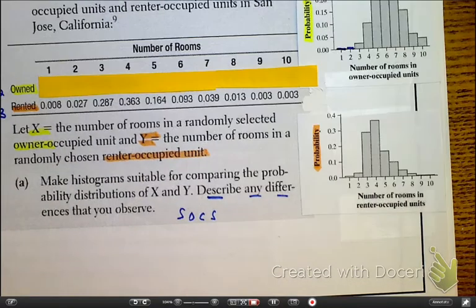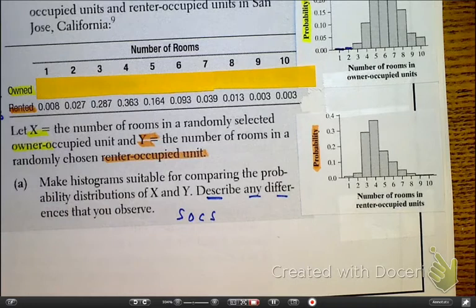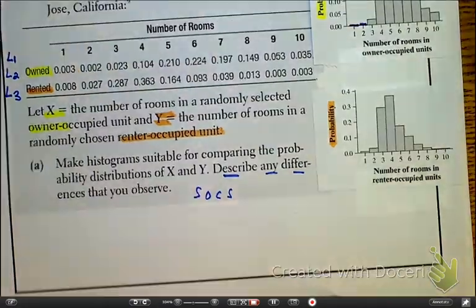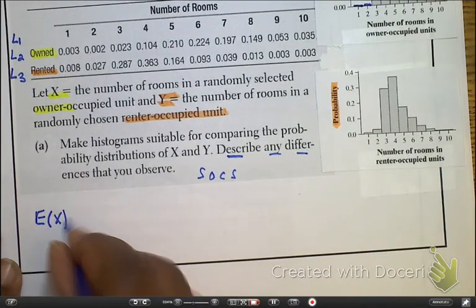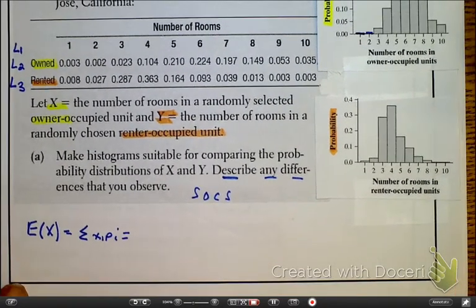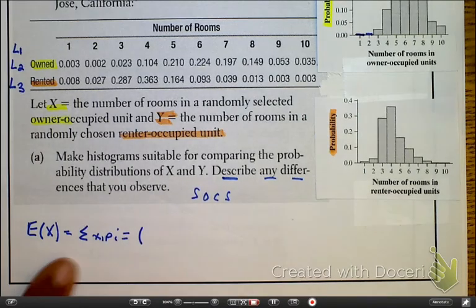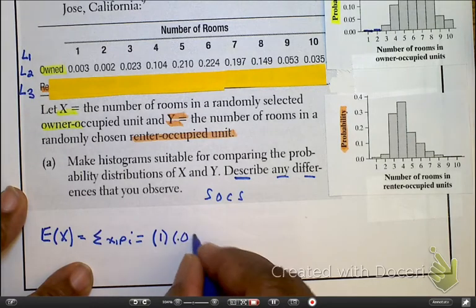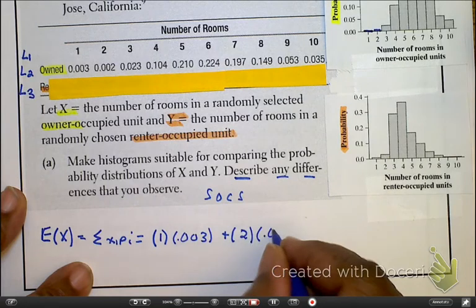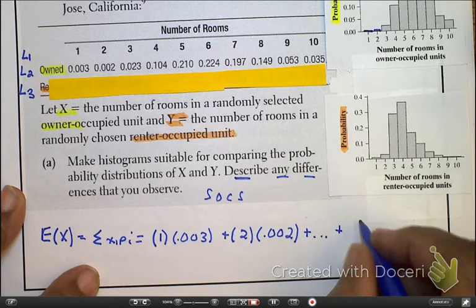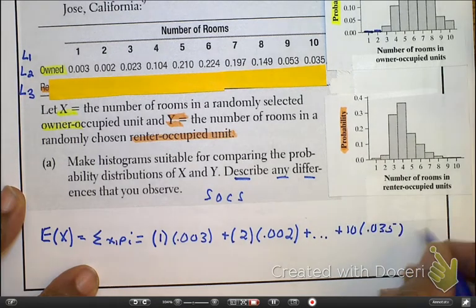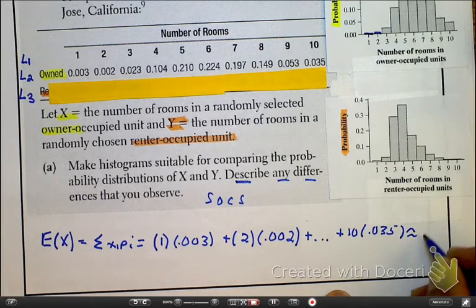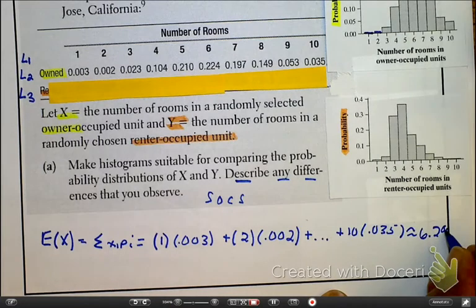Next, what I want to do is find the expected values to define the means. So let's remember our formula. So here is our generic formula. Remember, it's on your blue sheet. So we're talking about here, owner-occupied again. So that's going to be 1 times 0.003 plus 2 times 0.002 plus dot dot dot, plus 10 times 0.035, to give me the expected value of 6.284 rooms.